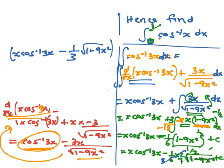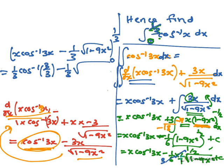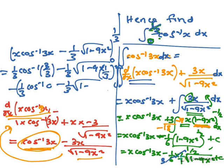Those endpoints are outside the domain, so changing it to 1/3 as the upper limit. So it goes from 0 up to 1/3: substituting x = 1/3 gives 1/3·cos⁻¹(3/3) minus 1/3·√(1 minus 9·(1/3)²), minus the lower limit: 1/3·cos⁻¹(0) minus 1/3·√(1 minus 9·0²).